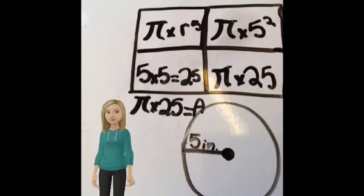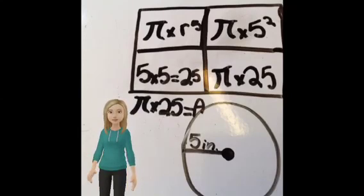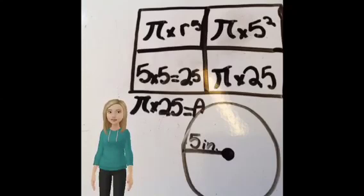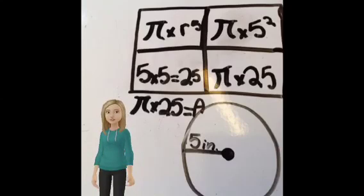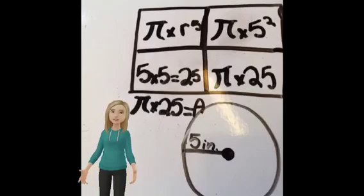Hi, I'm Sam. Today I'll be teaching you the formula for finding the area of a circle. To the right of me is a circle with a radius of 5 inches. The formula for finding the area of a circle is pi times radius squared.